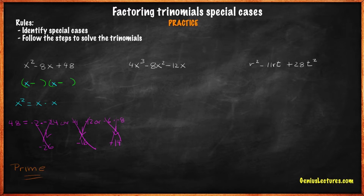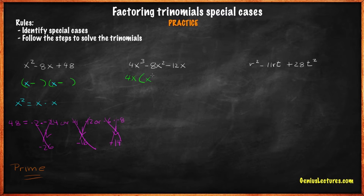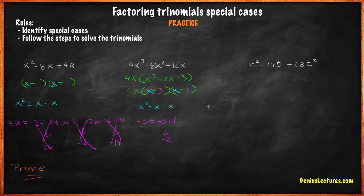Let's try another example: 4x cubed minus 8x squared minus 12x. As we can see, we can pull out the greatest common factor from this trinomial. The greatest common factor is 4x. After factoring out the greatest common factor, we end up with 4x times x squared minus 2x minus 3. The two integers whose product is negative 3 and their sum is negative 2 are negative 3 and 1. We write the answer as follows: 4x times (x minus 3) times (x plus 1).